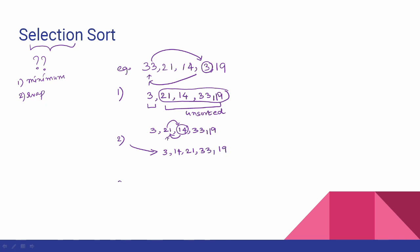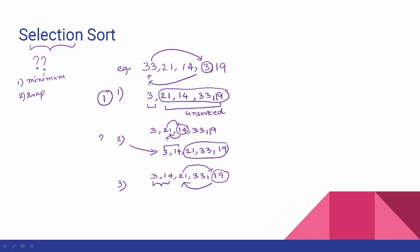In the third iteration, we have sorted the first two elements. The remaining elements are 21, 33, 19. We replace the third element with the minimum. The result of the third iteration is: 3, 14, 19, 21, 33.